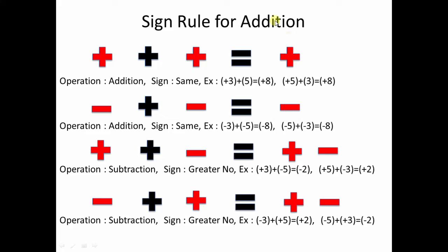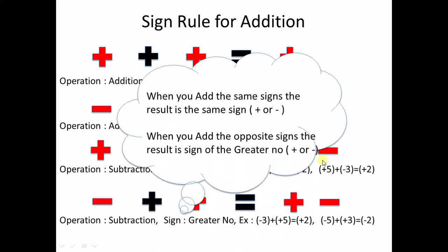To summarize the addition rules: when the signs are the same, the operation is addition and you keep that sign — plus plus gives plus, minus minus gives minus. When the signs are different, the operation is subtraction and the result takes the sign of the greater number, which can be either plus or minus.